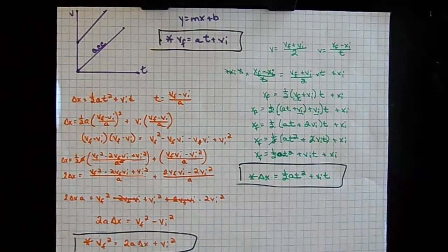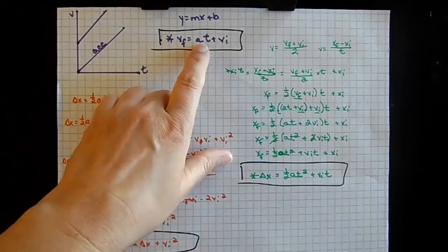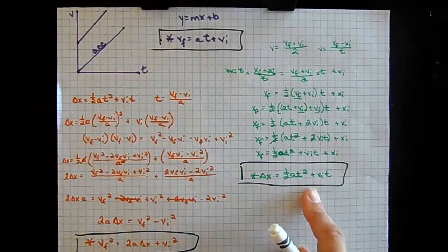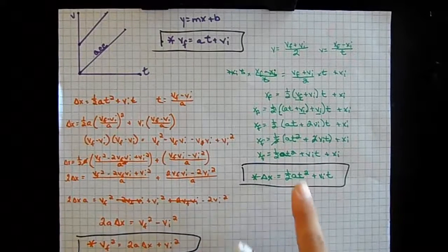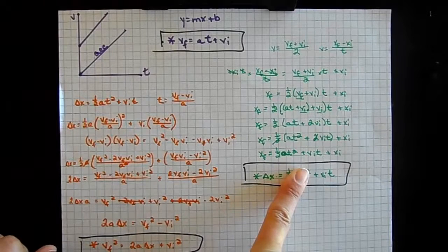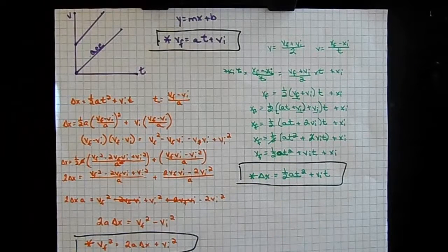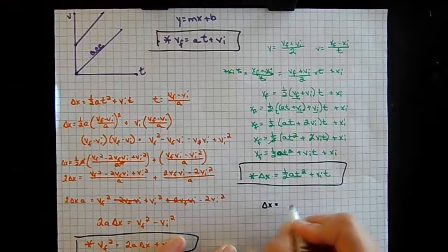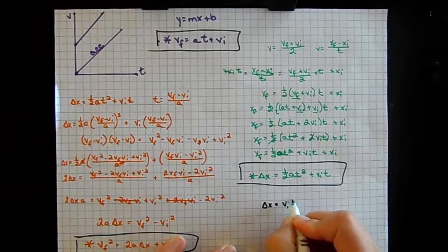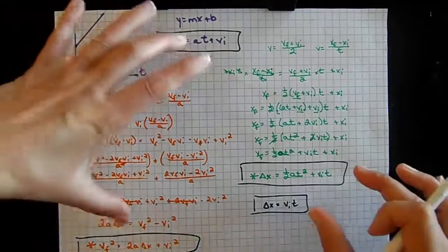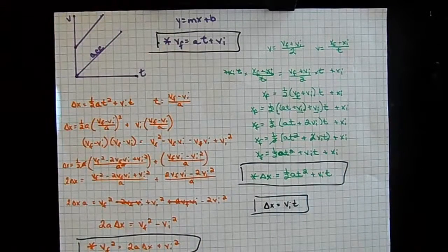Keep in mind that these are only for accelerating objects. However, if an object is not accelerating, acceleration is zero, so any term with acceleration becomes zero. In equation two, when acceleration is zero, we get Δx = Vi·t, which is exactly the equation we got from our constant velocity lab. So these are really our four kinematics equations that are very useful.